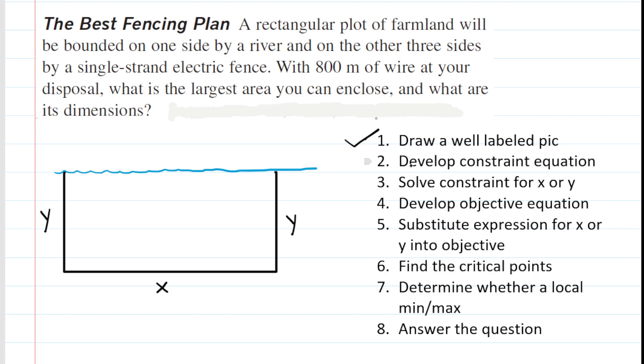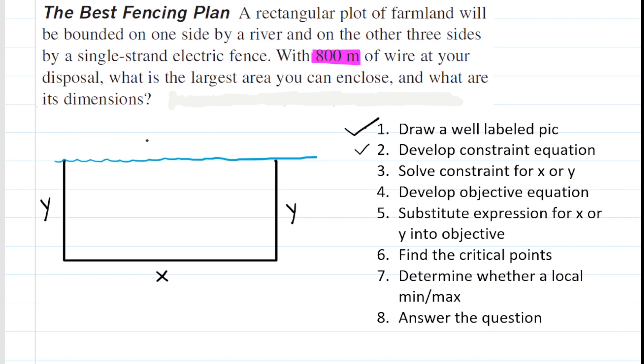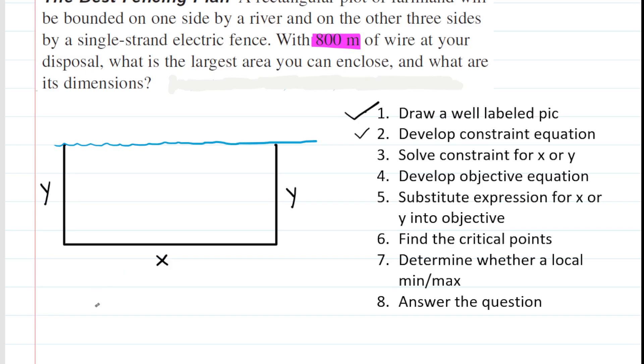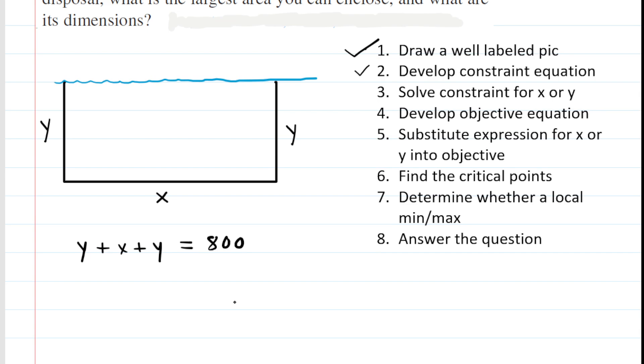We can now go on to step two, which asks us to develop a constraint equation. A constraint equation is going to be based on whatever number is provided to you in the question. In this case, the only number provided is 800 meters of wire. That's going to represent the perimeter of this plot of farmland. So we add up the three sides and set that equal to 800: y plus x plus y equals 800 meters of wire. We simplify by combining the y's, so x plus 2y equals 800 meters of fencing.